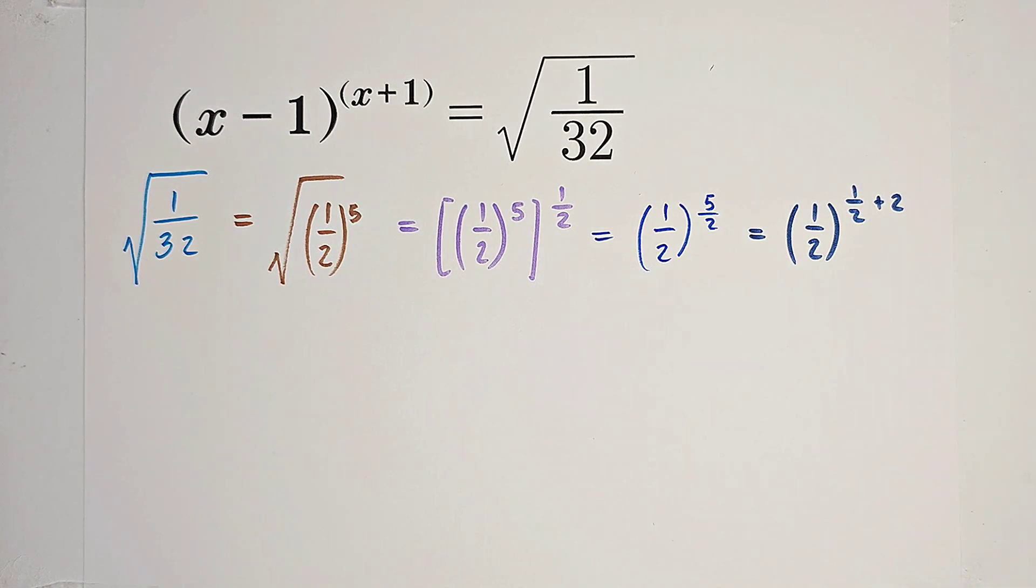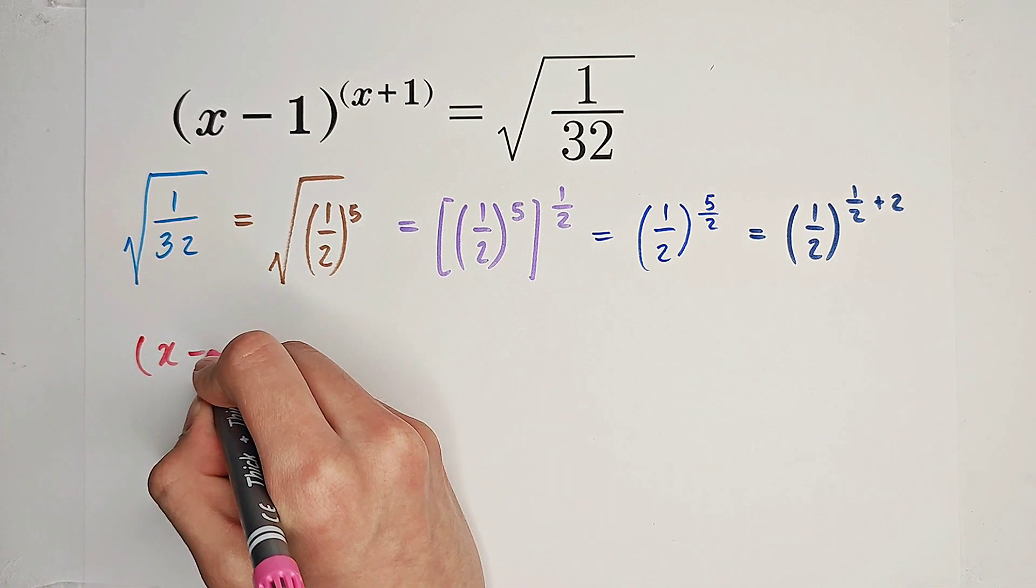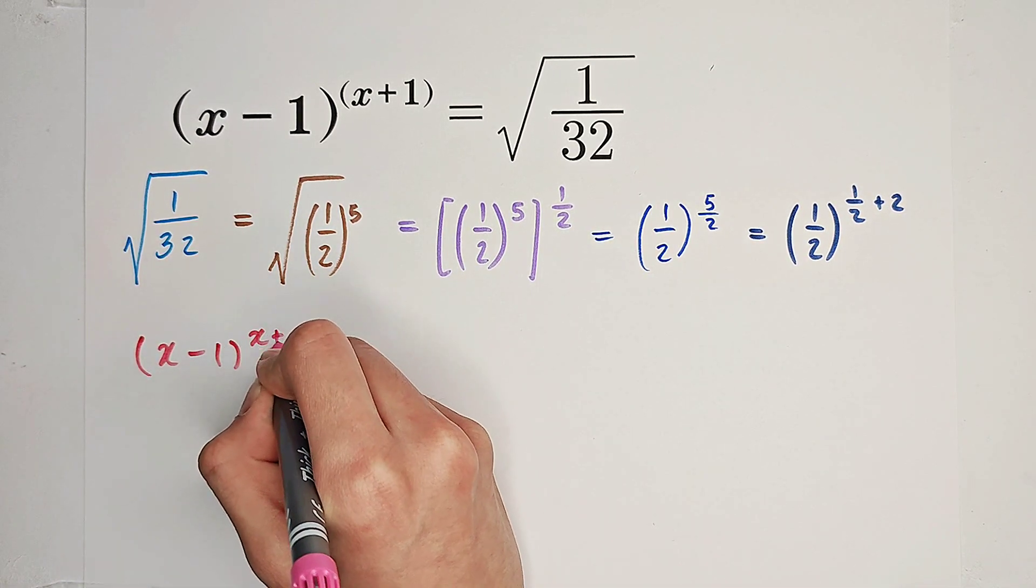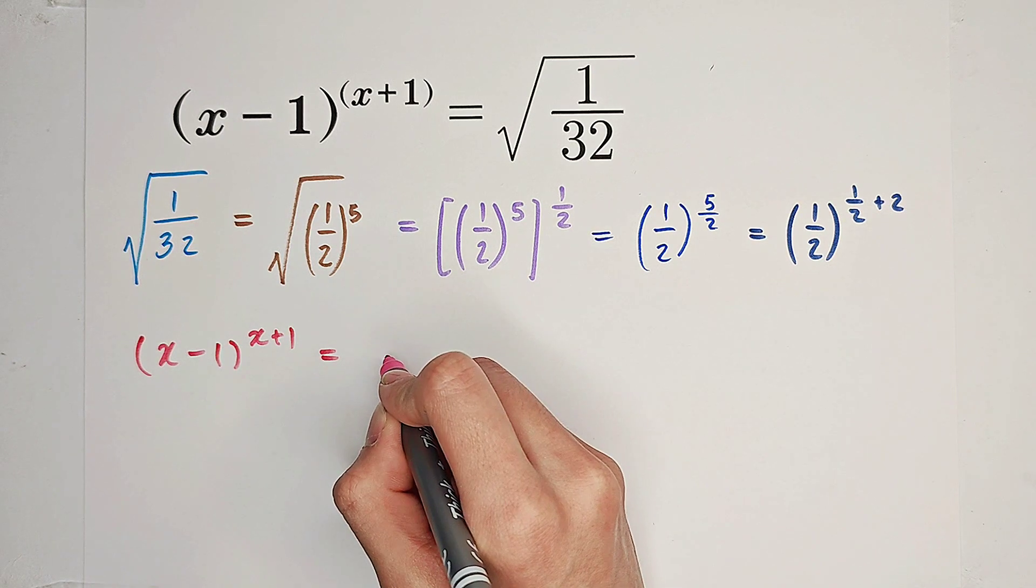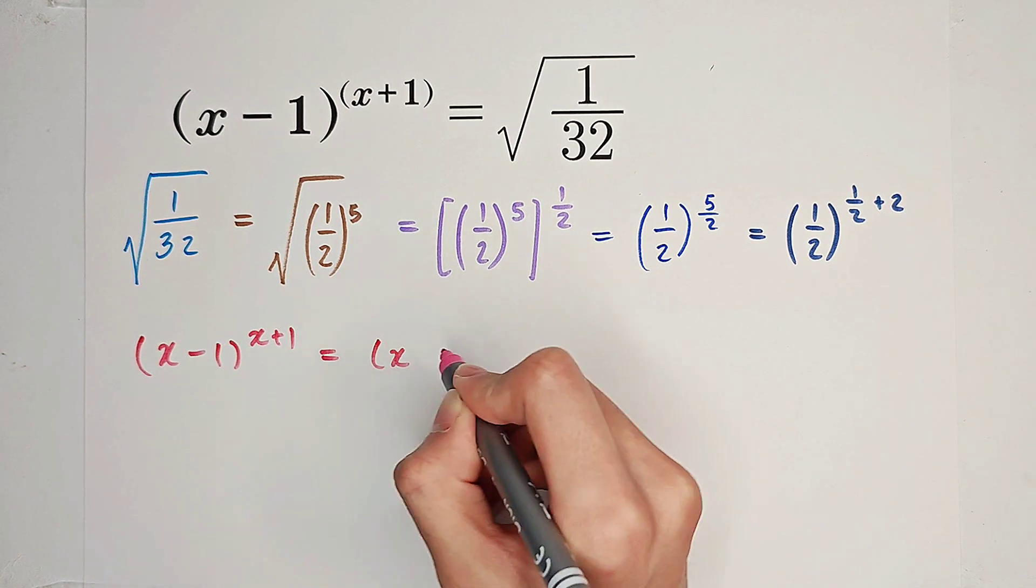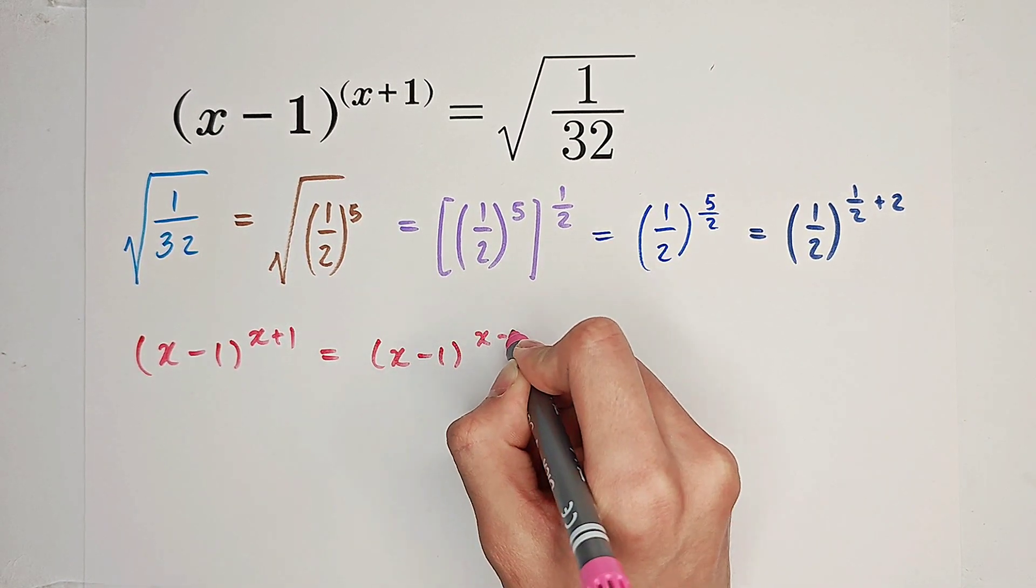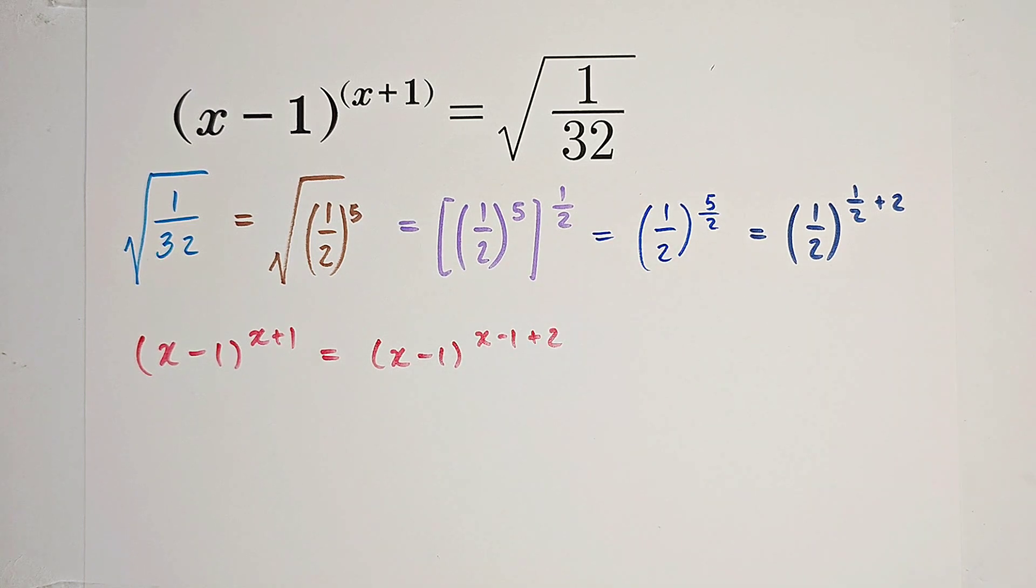Now, let's focus on the left-hand side. Let's have a look at x minus 1 to the power of x plus 1. The exponent x plus 1 can be written as x minus 1 plus 2.